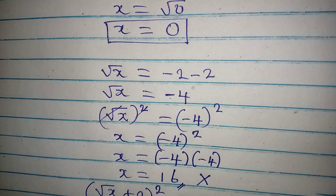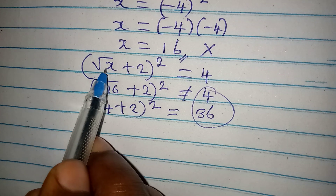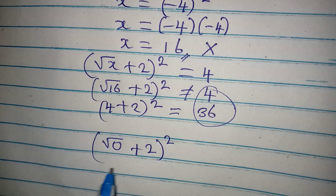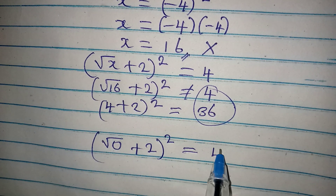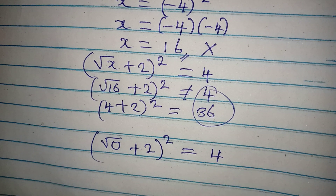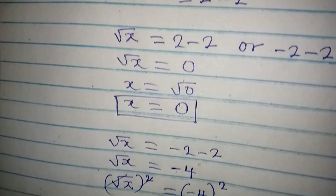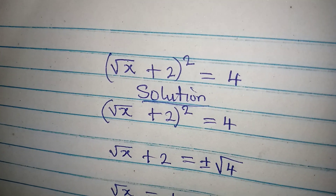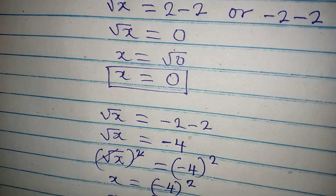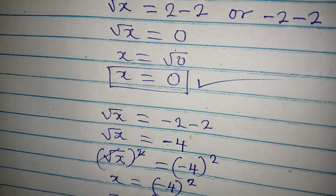Now let's check x equals 0. Substituting into the original equation gives square root of 0 plus 2, all squared. That is 0 plus 2 equals 2, and 2 squared equals 4, which matches the right-hand side. So the only value of x that satisfies the equation is x equals 0. Thank you for watching.